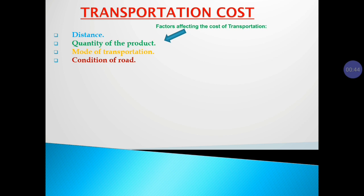Another important factor is quantity of the product. If the quantity to be transported is more, the cost is likely to be more; if it is less, the cost is likely to be less. Another important factor is mode of transportation — there are different means such as rail, road, water, and air. If it is air transport, costs are going to be on the higher side; if it is rail, they are going to be on the lower side.